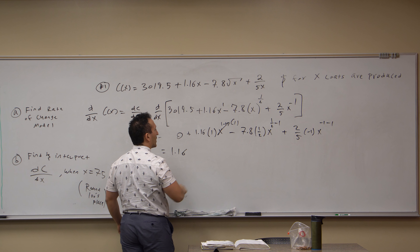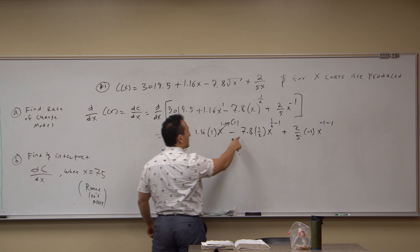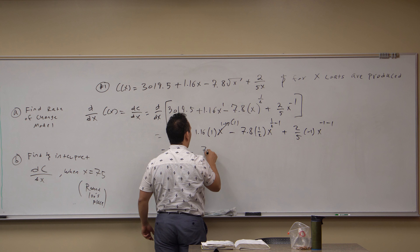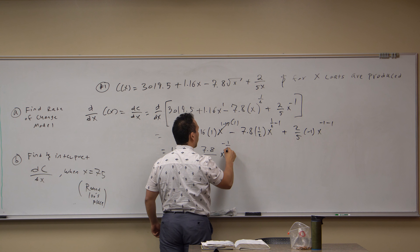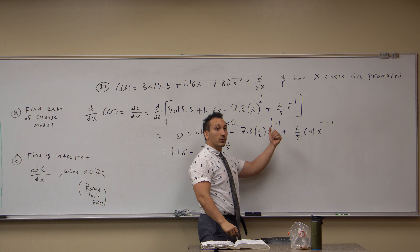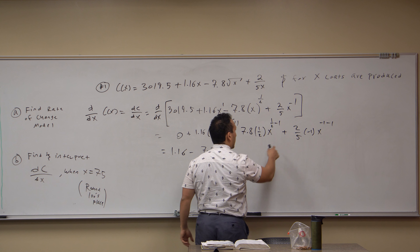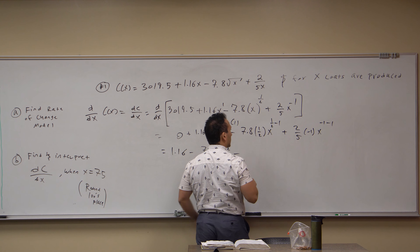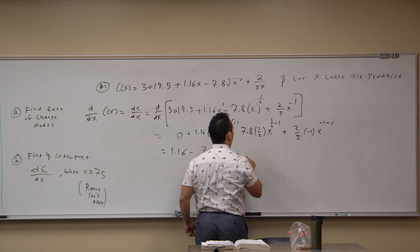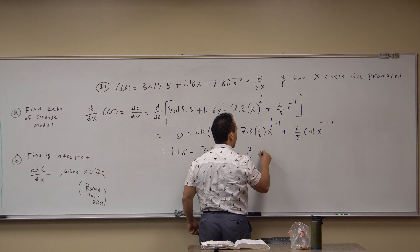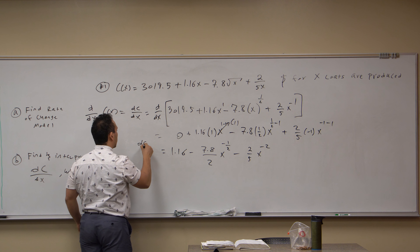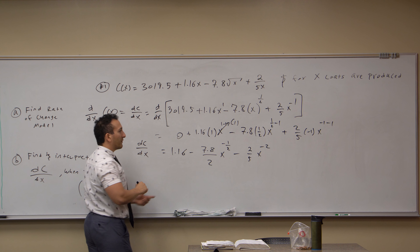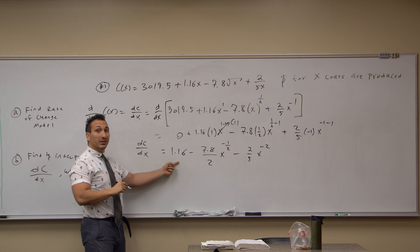Regrouping: the zero is zero, 1.16 just stays as 1.16. The middle term becomes minus 7.8 divided by 2, times X to the negative one-half — because one-half minus one is negative one-half. The last term gets a negative sign, becoming two-fifths X to the negative two. So this is our derivative DC/DX.